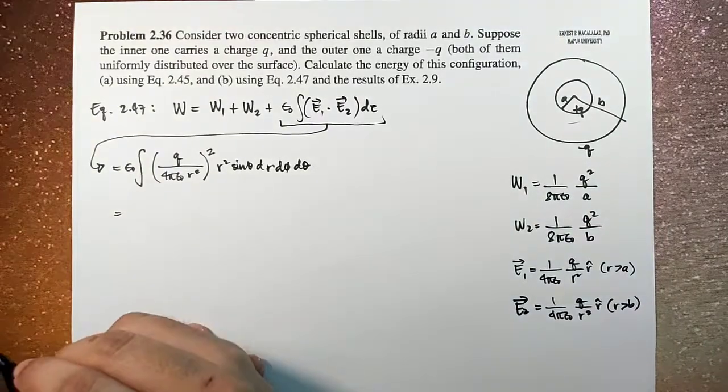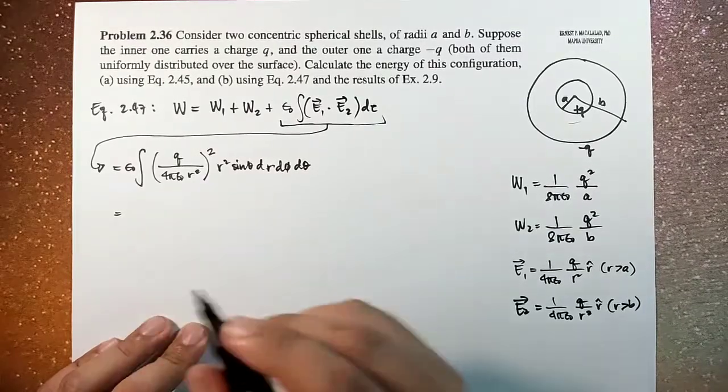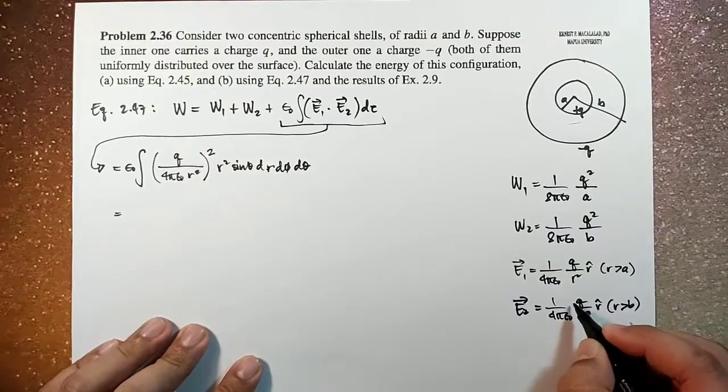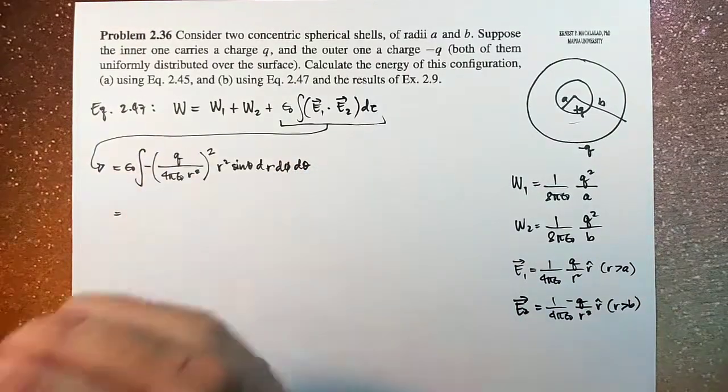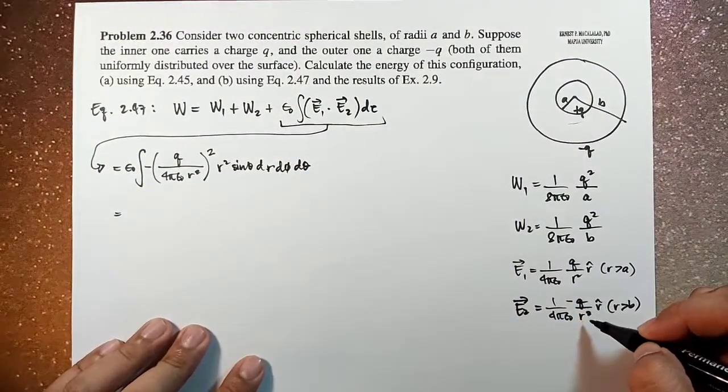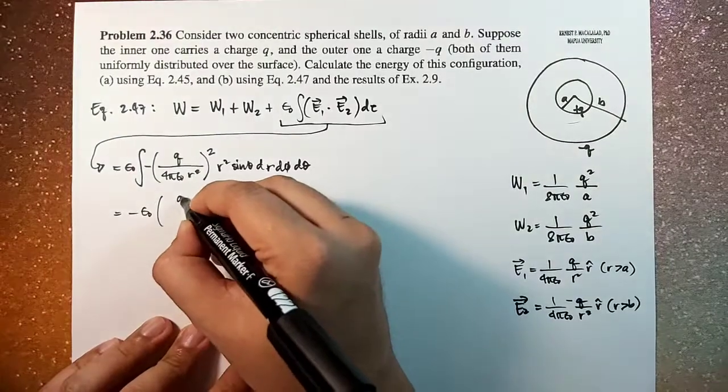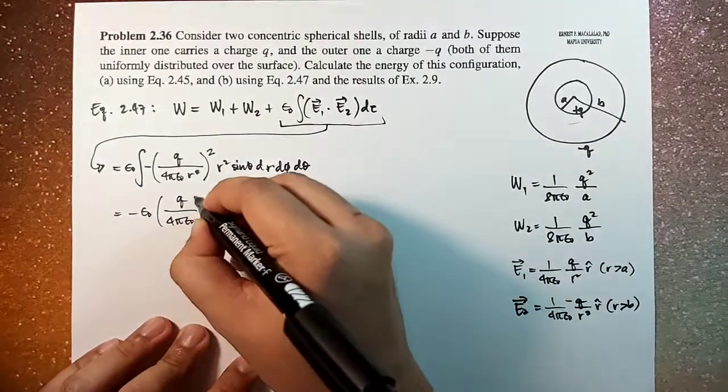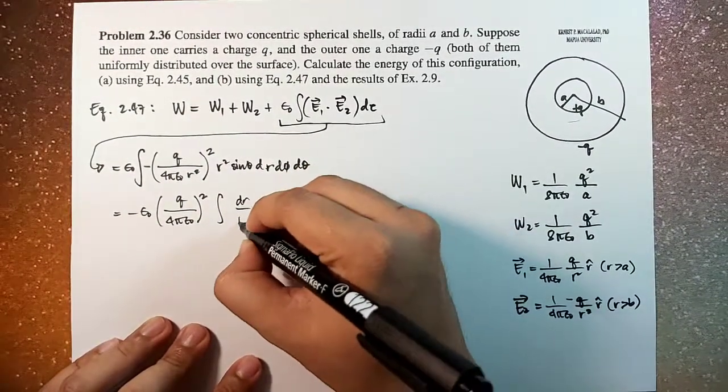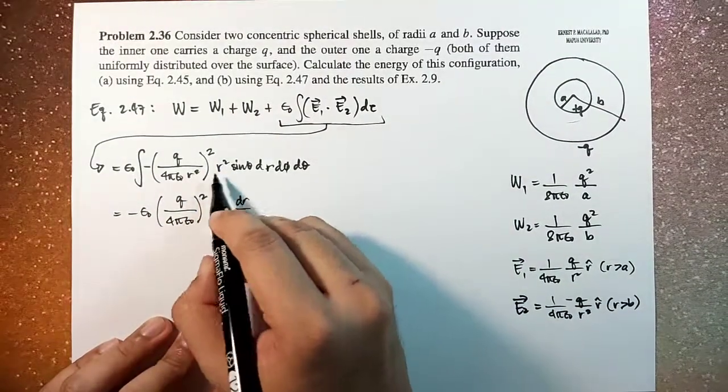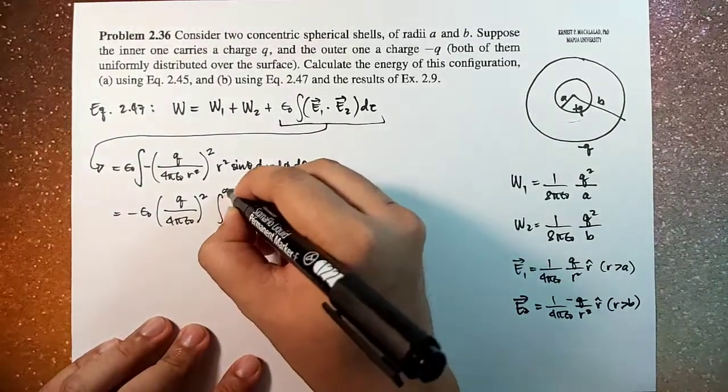Okay, so you know that for the theta and d phi, because this is a sphere, this will give 4 pi. So let's do this. So this becomes, sorry, this should be negative. Negative, oh yeah, this should be negative Q squared. So this becomes negative epsilon naught times Q over 4 pi epsilon naught squared, times integral of dr over r squared, because this is r to the fourth, this is r squared. And then the evaluation will be from B to infinity.